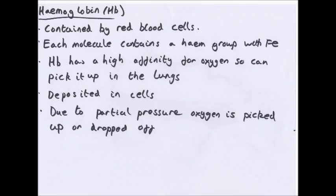Partial pressure of oxygen (pO₂) is a measure of oxygen concentration — the greater the concentration, the higher the partial pressure; likewise for carbon dioxide (pCO₂). Haemoglobin's affinity for oxygen depends on partial pressure: oxygen loads onto haemoglobin to form oxyhaemoglobin when pO₂ is high, and unloads when pO₂ is lower. Alveoli have a high pO₂, so oxygen loads onto haemoglobin there. When cells respire, they use oxygen, lowering pO₂, so oxyhaemoglobin delivers oxygen to respiring tissues where it unloads.